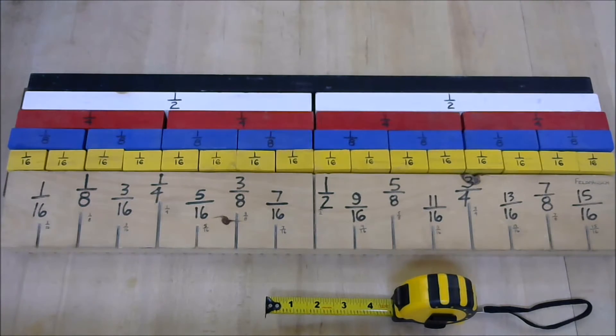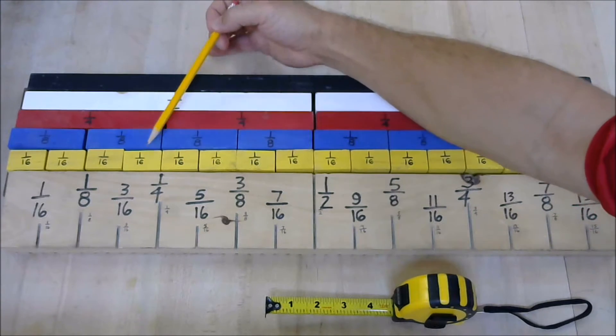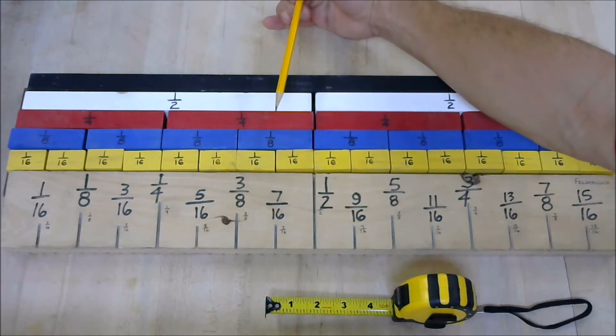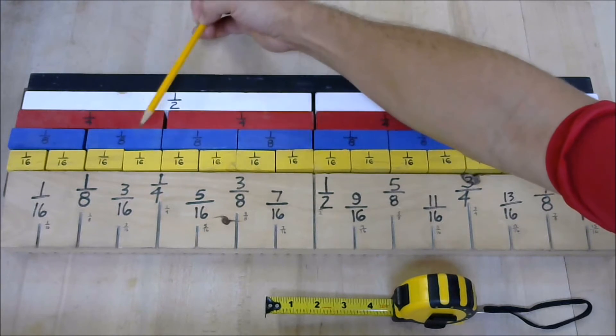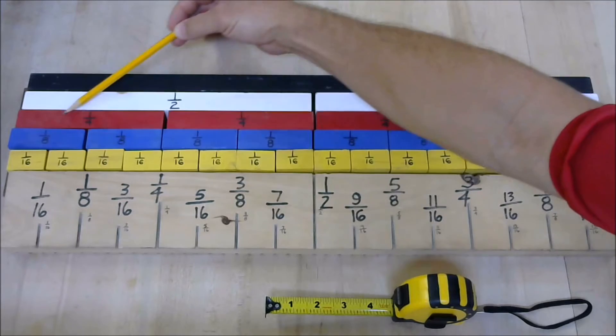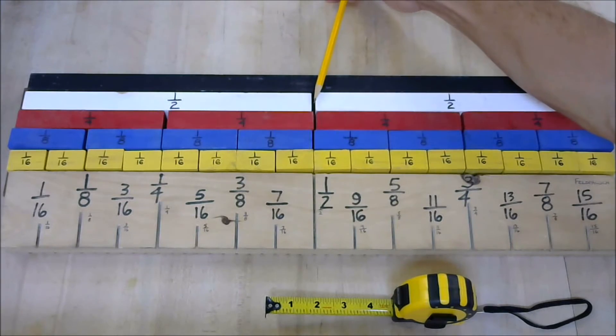In fact, if you look for a pattern, you'll discover that whenever you count an even number of a smaller fraction, it will always line up with the fraction larger. 2 sixteenths lines up with 1 eighth. 2 eighths line up with 1 fourth. 2 fourths line up with 1 half.